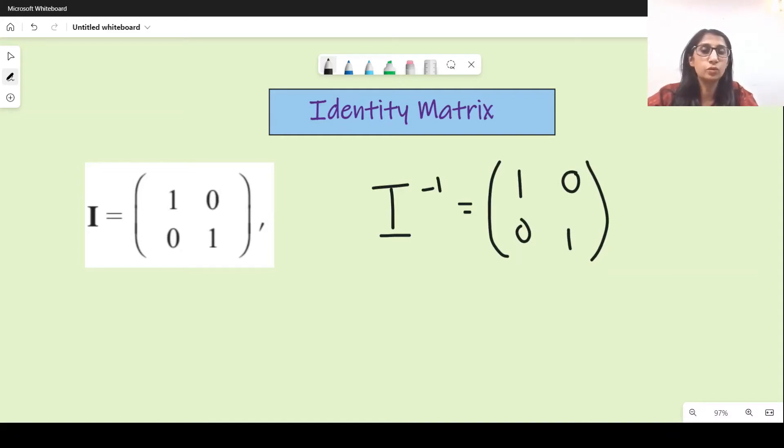Another property of this is that if you multiply a matrix with I, for example if you have a matrix A, let's say one two three four, and if you have to find A times I, then the result is matrix A. And if you have to find I times A, then the answer is still A. So if you multiply identity matrix with any matrix in any order, the answer is the other matrix.